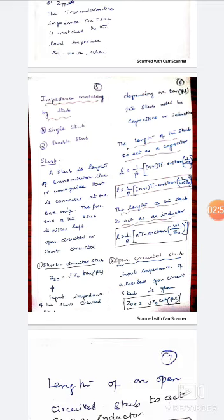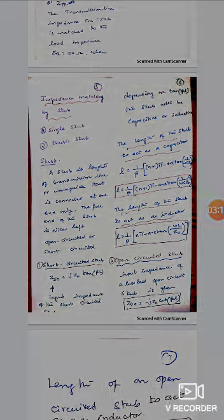So what is the length of this stub to act as a capacitor? That is given by L is equal to 1 by beta n plus 1 pi minus arc tan. Arc tan that's tan inverse 1 by omega c like that. When the length of this stub is to act as an inductance given by L is equal to 1 by beta n pi.